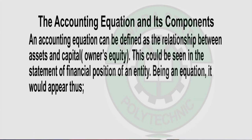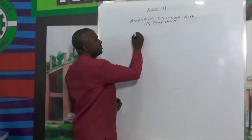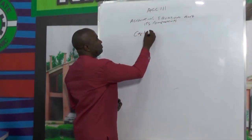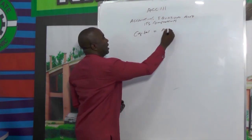What is the accounting equation? The accounting equation can be defined as the relationship between assets and capital. Capital is otherwise known as owner's equity. This can be seen in the statement of financial position, which is otherwise known as a balance sheet. In the accounting equation, the equation is: capital is equal to assets.